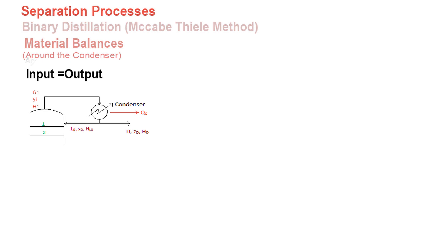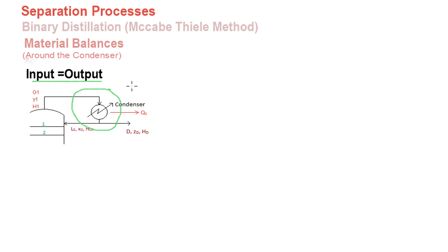The first material balance we'll be constructing is that around the condenser. As with any material balance, the first thing we do is set our system boundary. Our system boundary would be around this condenser as shown here, bounded within the green outline. We then apply our material balance equation: input is equal to output. This equation was developed from the standard equation — accumulation equals input minus output plus generation minus consumption — which was simplified into this form based on our system needs.